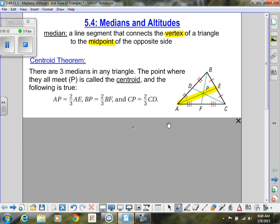So if there are three medians in any triangle, that point where they all meet is called the centroid. So this point right here, P, that's the centroid. And the centroid theorem says that AP, so if I took this part right here A to P, that would be two-thirds of the whole length AE. So if I went all the way from A to E, whatever that length is, AP, the green part, is two-thirds of it. And that goes for all the other medians as well.